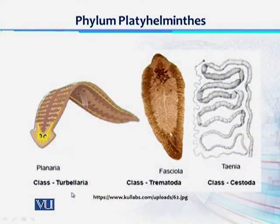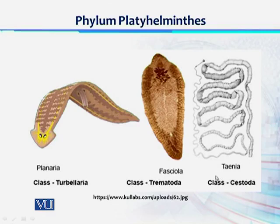These are the most commonly recognized classes. Turbellaria has the representative example Planaria. Trematoda has Fasciola hepatica, the liver fluke, as the common example. Class Cestoda has Taenia solium, the tapeworm, as the common example.